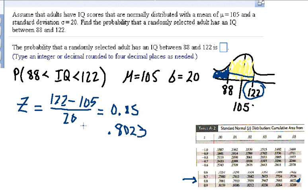And so I'm going to do a Z value for that, equals 88 minus 105, divided by 20.